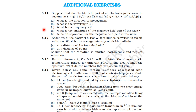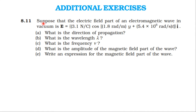From the NCERT textbook, from the topic electromagnetic waves, additional exercise, question 8.11: Suppose that the electric field part of an electromagnetic wave in vacuum is equal to 3.1 Newton per Coulomb, cos(1.8 radian per meter × y + 5.4 × 10^6 radian per second × t), in the x-direction.